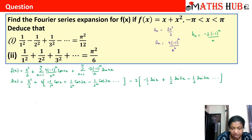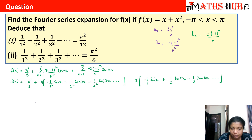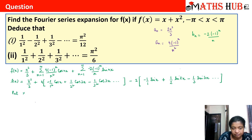Now let us check the deduction. We need the alternating plus-minus terms in the cosine part, and we want the sine terms to vanish. If we put x = 0, cos(0) = 1 for all terms — but that gives all positive terms, not alternating. Actually at x = 0, f(0) = 0 and the sine terms all vanish, so we get the alternating series from the cosine terms.